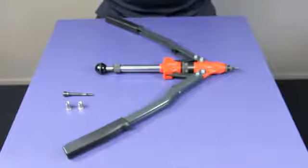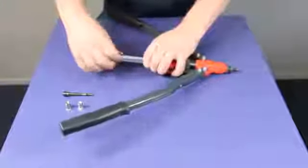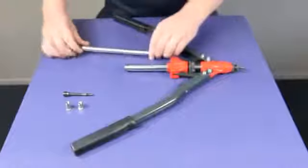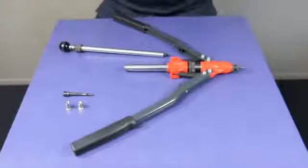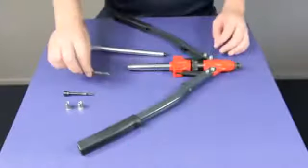Set your tool for left or right rivets by changing the nose piece. Remove the screw handle, replace the mandrel and reattach the screw handle.